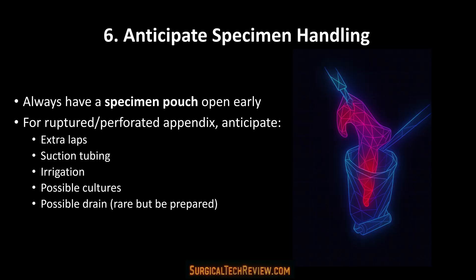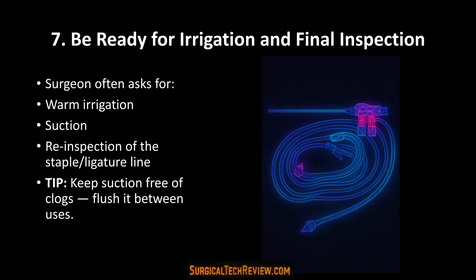Before the surgeon even removes the appendix, have your specimen pouch open and ready — the handoff must be smooth and contamination-free. If the appendix is ruptured or perforated, prepare for extra laparotomy sponges, additional suction, increased irrigation, possible cultures, and a drain (rare, but always be prepared). This is where your awareness and preparation protect both the surgical field and the patient.